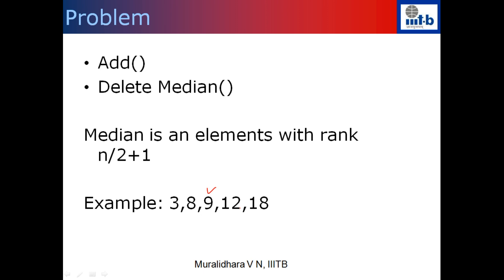9 is the median because there are exactly two numbers bigger than it (n/2 = 5/2 = 2). So the rank n/2 + 1 essentially means exactly n/2 numbers are bigger than this element. When we delete the median 9 from the collection, we return 9 and remove it. Now with the remaining elements, n = 4, so n/2 = 2, and the new median is 8, since there are still two numbers bigger than it. We can then delete 8, add 20 or 25, and continue. Each operation is either adding a number or deleting the median.